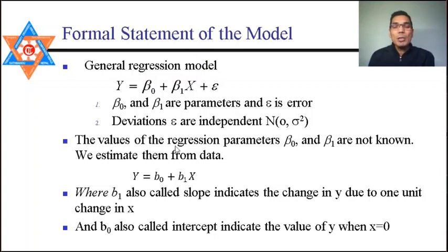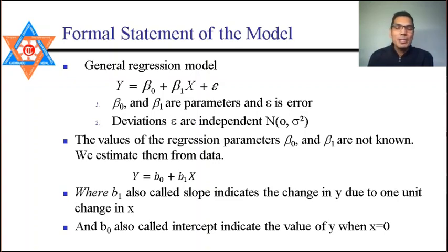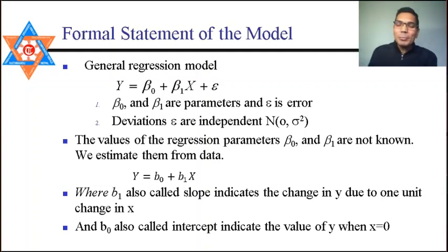The values of regression parameters β₀ and β₁ are unknown, so we estimate them using the regression line ŷ = b₀ + b₁x. β₁ is the slope, indicating the change in y due to a one-unit change in x. β₀ is the intercept, which is the value of y when x equals 0.